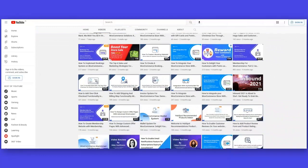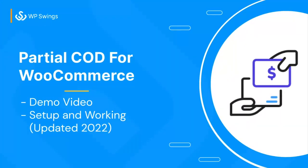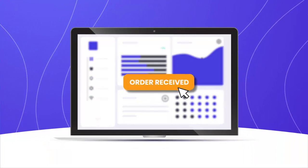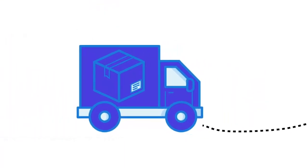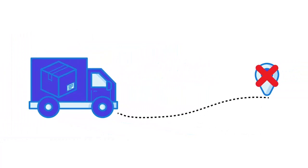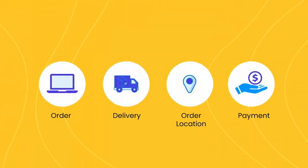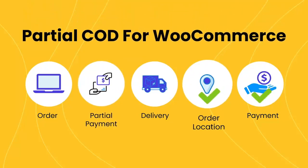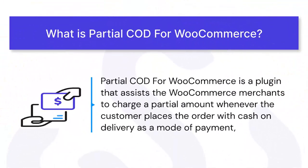Today's demo video is about the Partial COD for WooCommerce plugin, in which I will demonstrate the working of the plugin. Before starting with the setup part, let me give you a short introduction to the product. If any merchant owns a WooCommerce store, the main concern is cash on delivery issues caused by fake orders or fraud, which ultimately affects the average payment cycle. To stamp out these issues, the Partial COD for WooCommerce plugin can be the ultimate knockout solution, restricting the creation of fake orders.